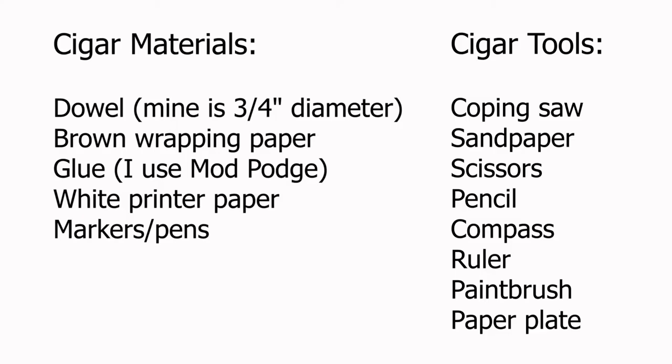The materials that you'll need to make this cigar are up on the screen, and these revolve around trees, ink, and glue. So we're going to need our dowel and some brown paper. I'm going to be using wrapping paper, but you could use really any brown paper. And then we'll need some materials to make the label, as well as glue everything together.